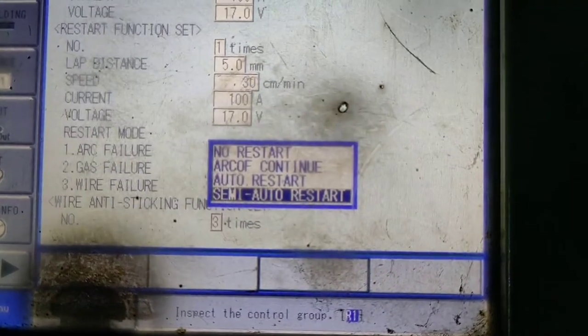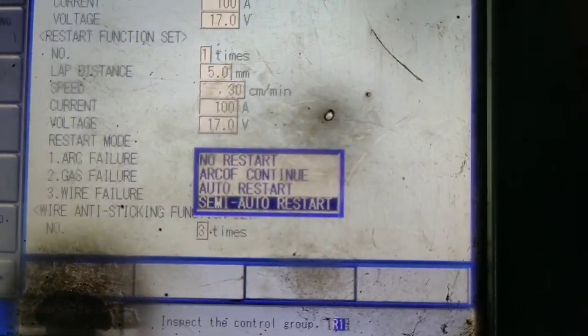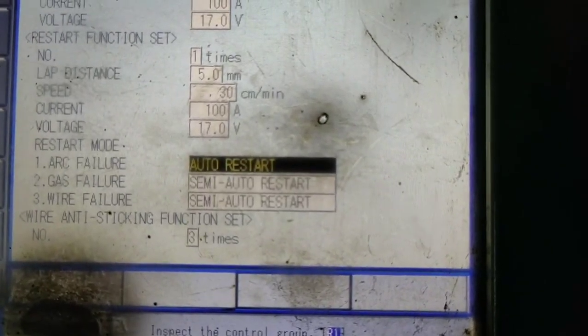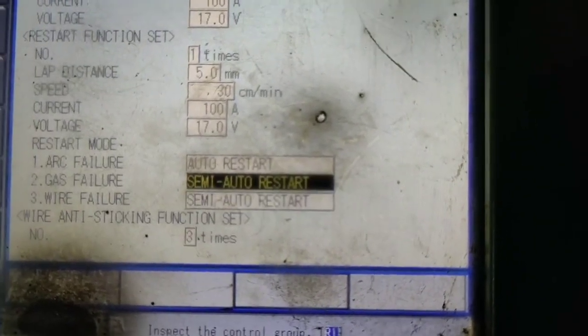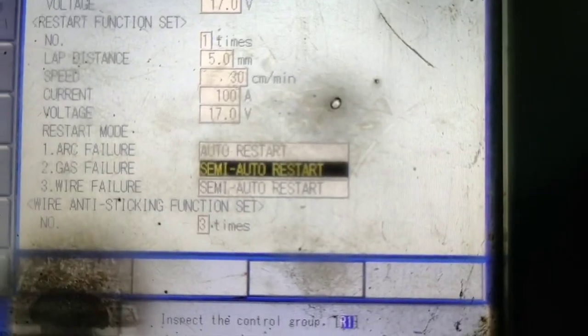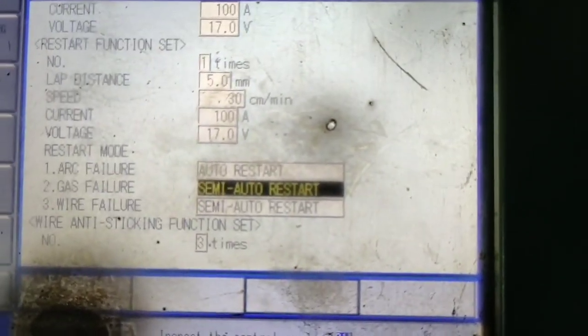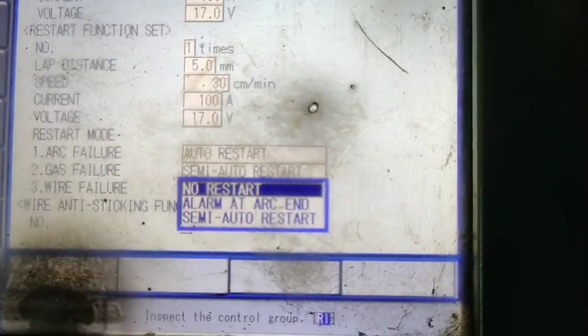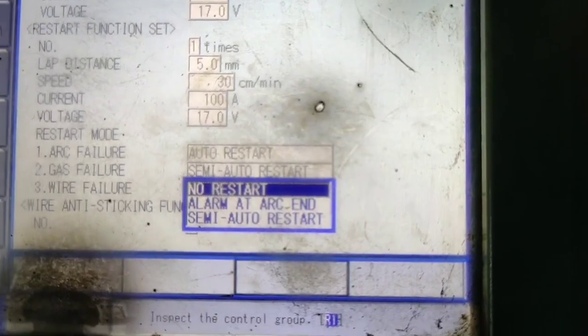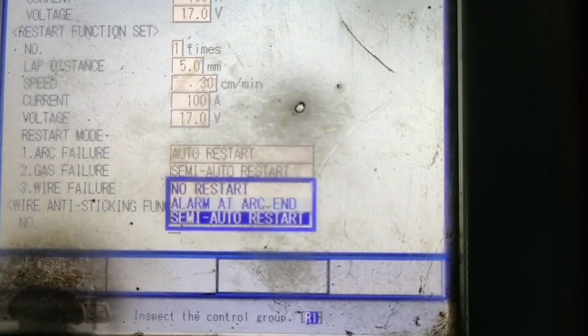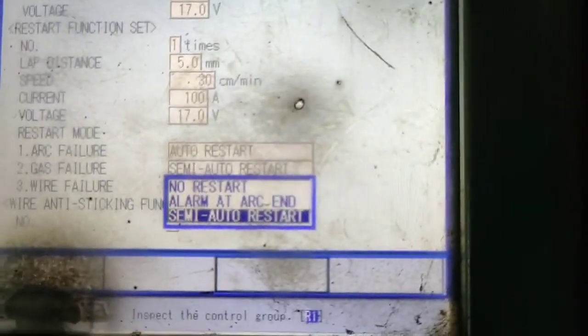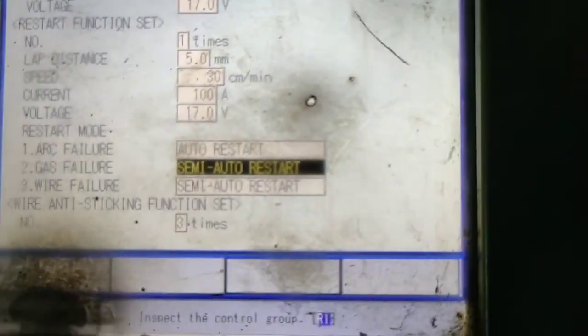Now we have come on the wire anti-sticking function. Wire anti-sticking function is used at the end of the welding. At the end of the welding your robot wire is going to be stuck because your wire is not retracted.